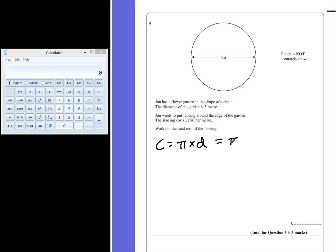So pi we can find on our scientific calculators. If you don't have that just use the number 3.14. And the diameter we're told is 5 metres.